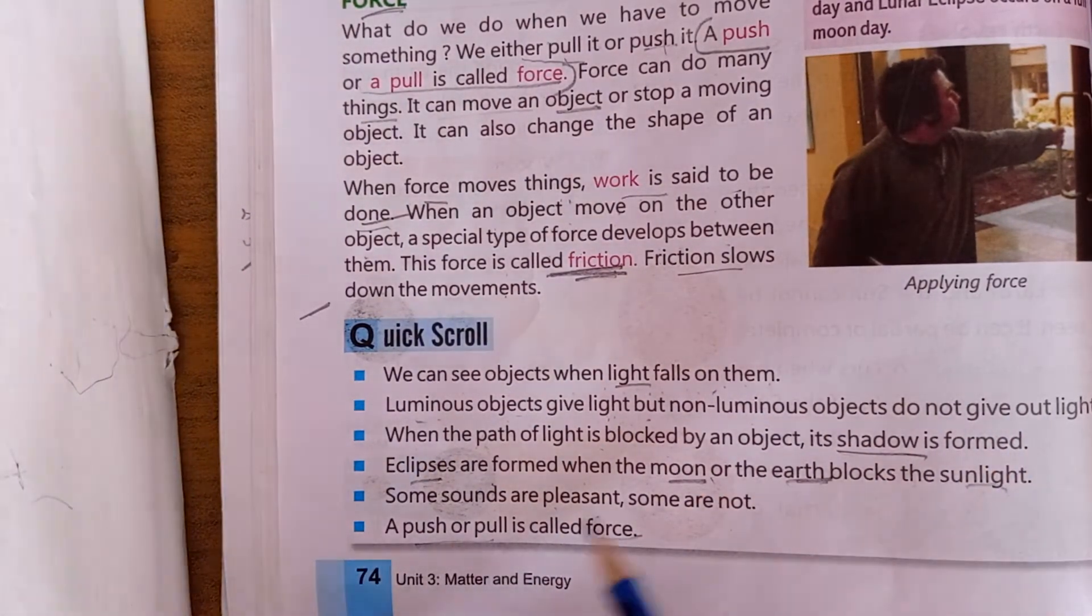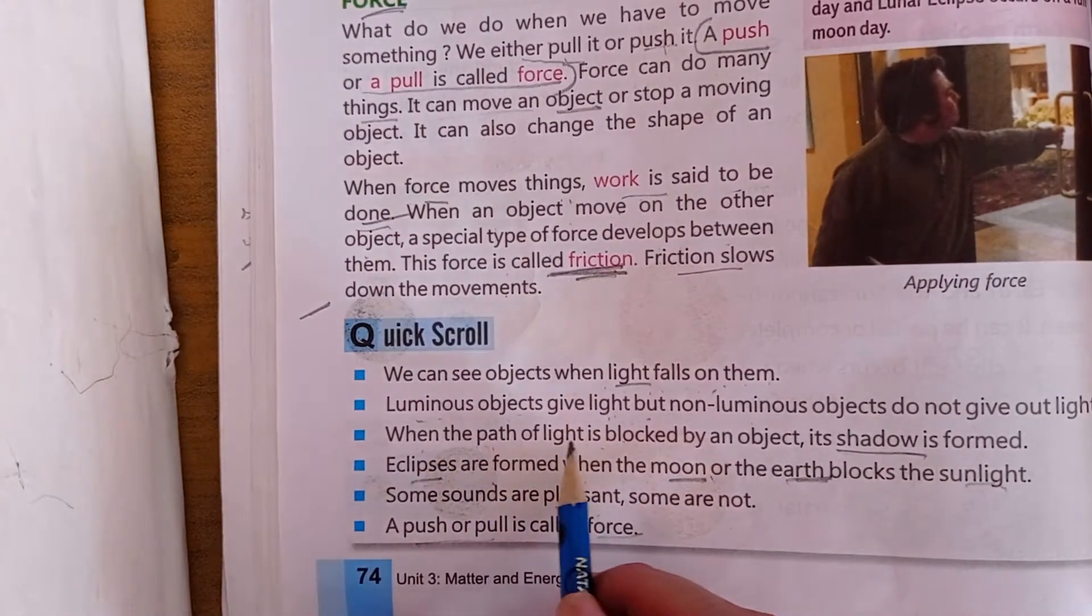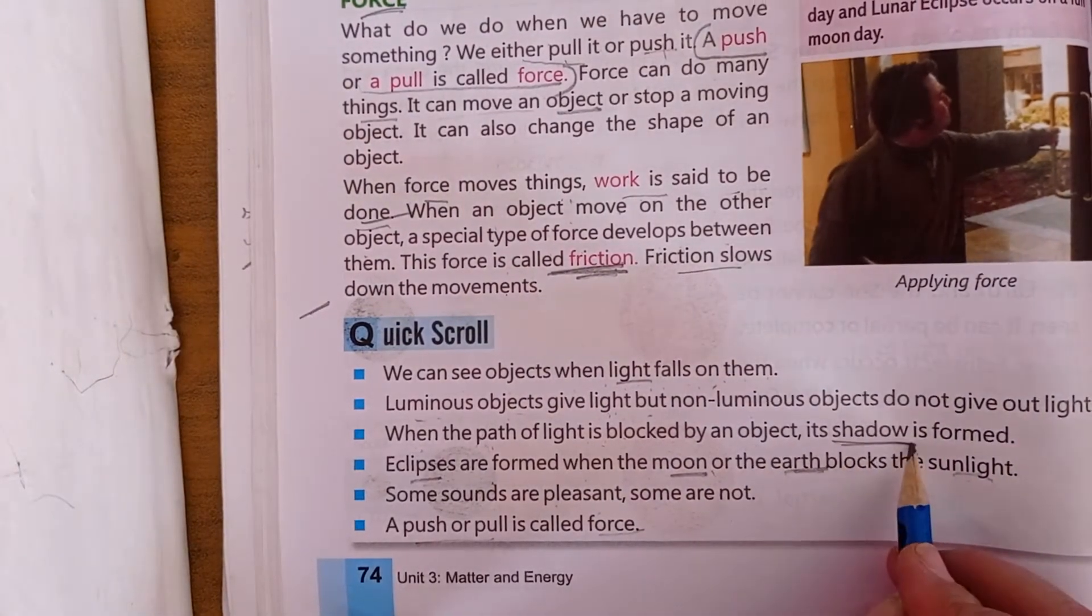But non-luminous objects don't give light, like pencil or table. Now, when the path of light is blocked, when light is blocked by an object, then what forms? A shadow.